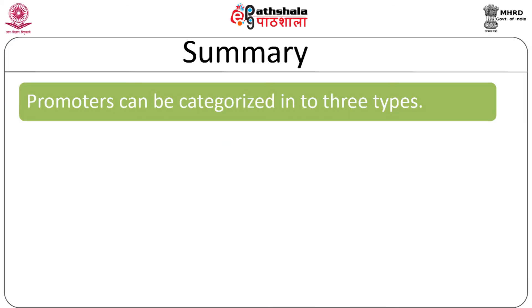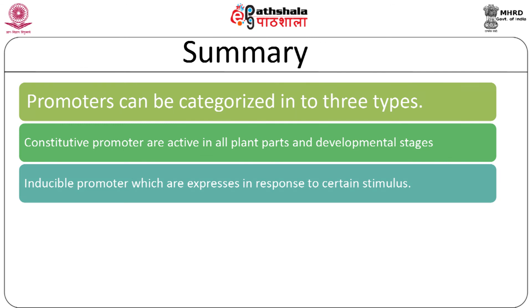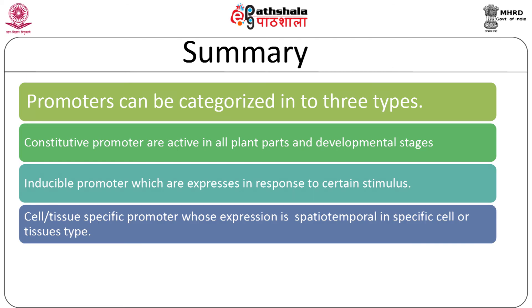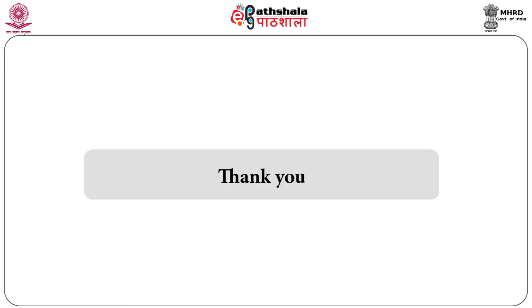In summary, promoters can be broadly categorized into three types: constitutive promoters, which are active in all plant parts and developmental stages; inducible promoters, which are expressed in response to certain stimuli; and cell or tissue-specific promoters, whose expression is spatiotemporal in specific cell or tissue types. Based on experimental requirements, we need to select an appropriate promoter to drive the expression of transgenes in specific cells, tissues, organs, and developmental stages. Thank you for your patient listening.